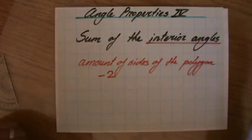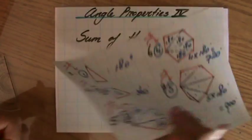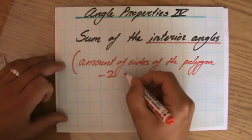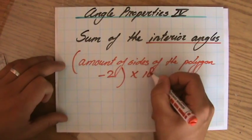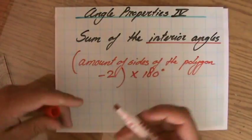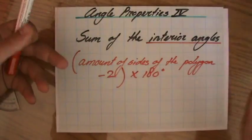And a triangle is 180 degrees, so all of that times 180 degrees. That will be the sum of the interior angles.